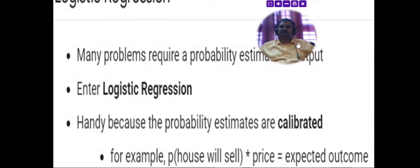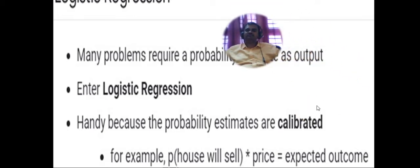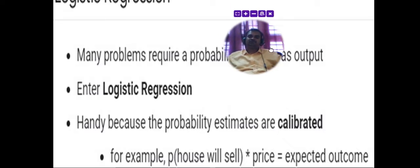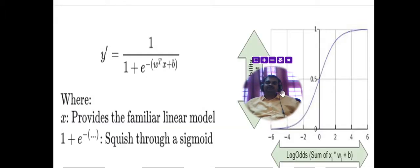Real estate professionals also use logistic regression to get profit estimates. They calculate the probability that a house will be sold, then multiply that by the price to identify the expected profit. This allows them to increase the effectiveness of their business models.